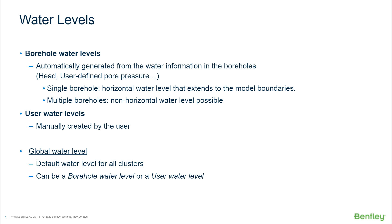On top of that, we can also define our own water levels. For example, if you want to make an excavation and lower the water level, that is something the user must define. Any additional water levels created in the flow conditions mode on top of the borehole water levels automatically get the name 'user water level.' They work the same from an engineering point of view — they just have different names so you know the origin. You can always rename a water level, for instance to 'phreatic level after excavation to minus two meters,' if that makes more sense for your project.